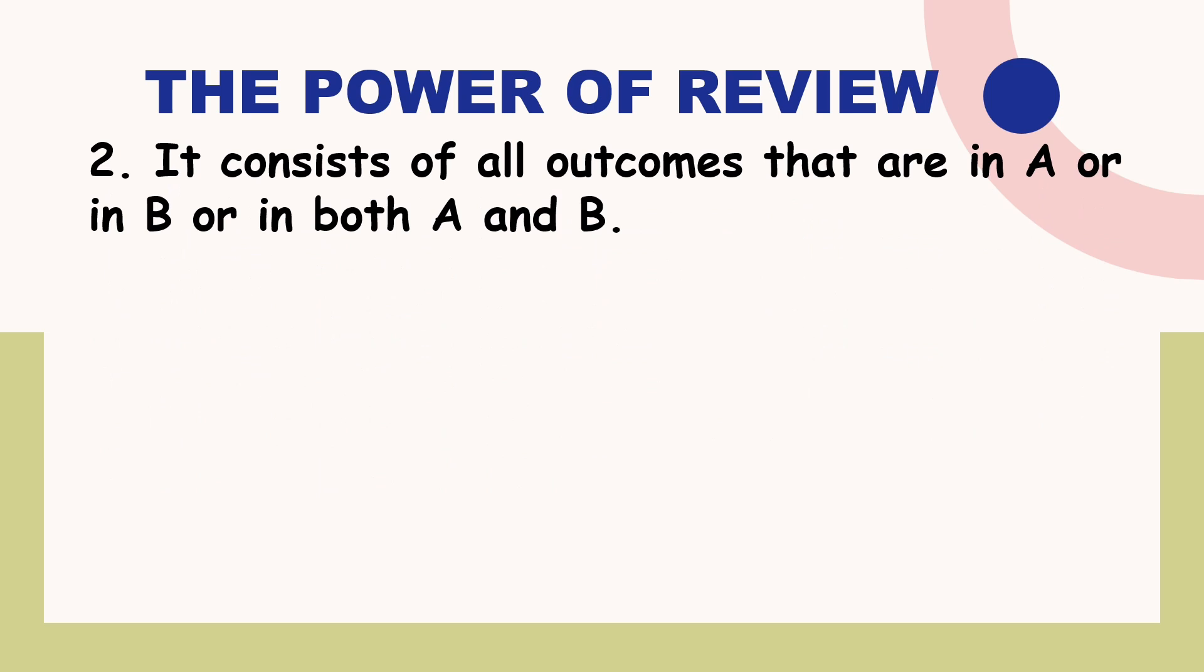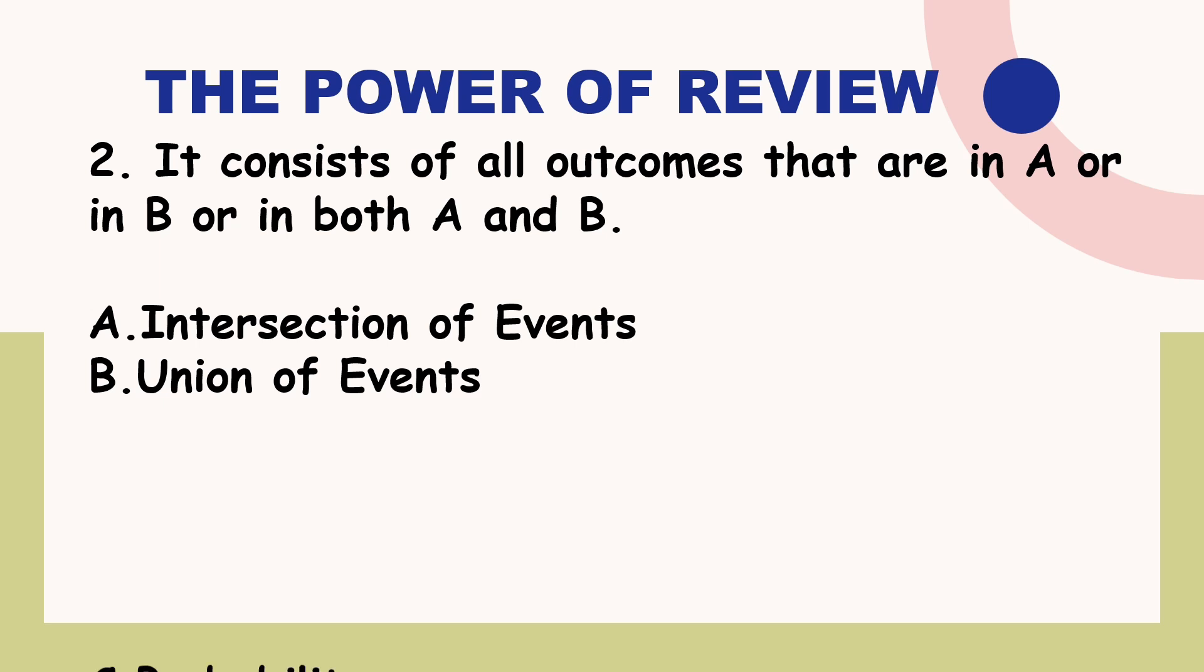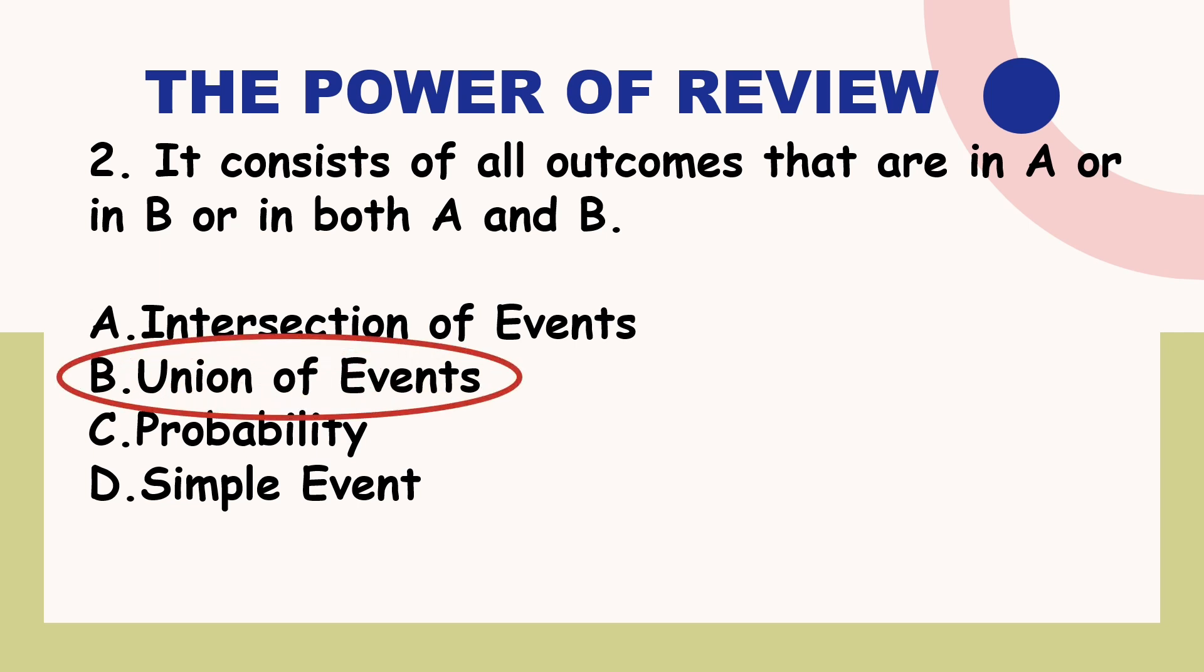How about our second question? It consists of all outcomes that are in A or in B or in both A and B. Is it A. Intersection of events? Is it B. Union of events? Is it C. Probability? Or D. Simple event? Your answer? Yes, you are right. It is letter B. Union of events.